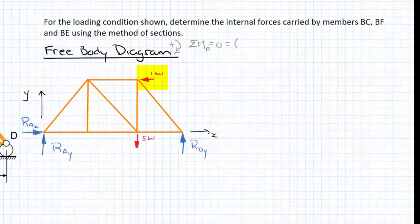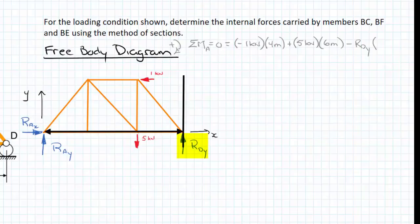So we'll start with the one kilonewton. It tends to rotate the structure counterclockwise, so we'll set it as negative. And its perpendicular distance is this vertical distance of four meters. Then we'll deal with the five kilonewtons. It goes in as positive as it tends to want to turn the structure clockwise about point A, so five kilonewtons with a perpendicular distance of the six meters, the distance between A and F. And finally we have RDY, again counterclockwise, so it goes in as negative multiplied by its perpendicular distance of nine meters.